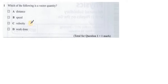This is question number 1. Which of the following is a vector quantity? Distance, speed, velocity, and the work done. Out of these 4, velocity is the vector quantity that needs direction as well as magnitude. So your option is C.